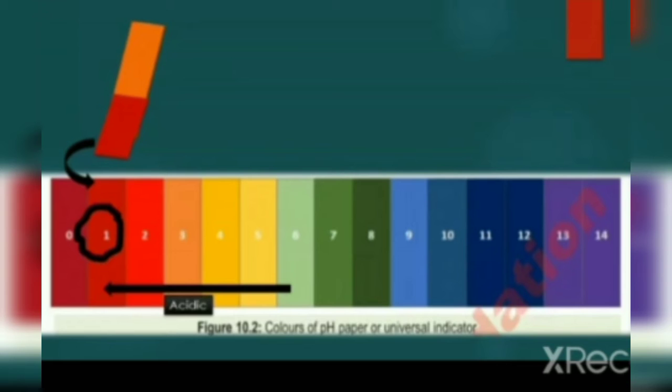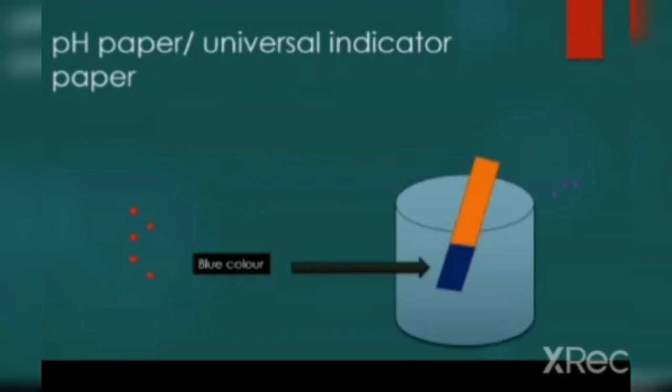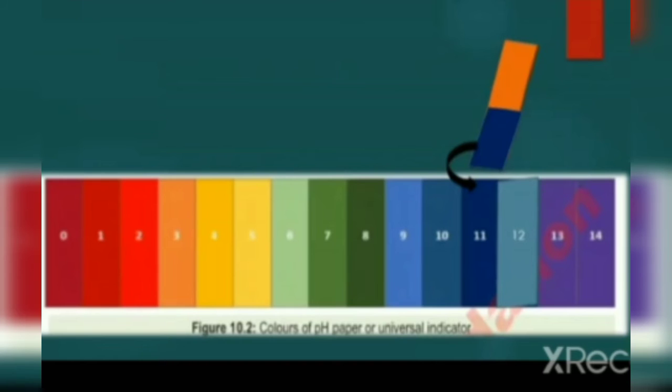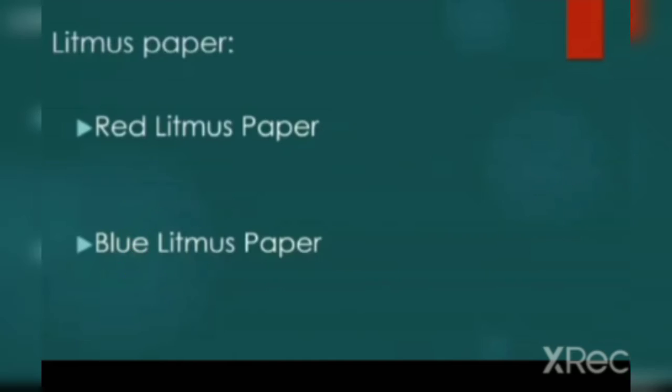Now second experiment. We are dipping pH paper in second solution and it turns blue. Match with pH paper color. This is matching with this color, number is 11. This 11 is greater than 7, so solution is basic in nature because pH greater than 7 indicates basic.